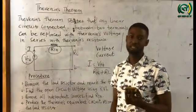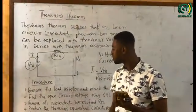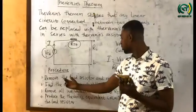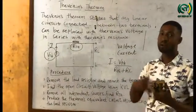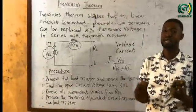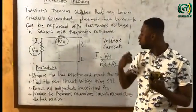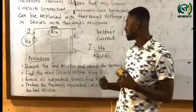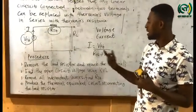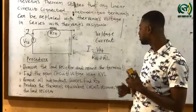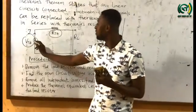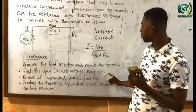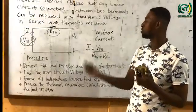There are four key procedures you need to follow whenever you want to apply Thevenin's theorem. The first one is: remove the load resistor and mark the terminals. When a question asks you to find the current through a certain resistor, that resistor becomes the load resistor — remove it and mark terminals A and B. Second, find the open circuit voltage, which is the Thevenin's voltage VTH, using Kirchhoff's voltage law.